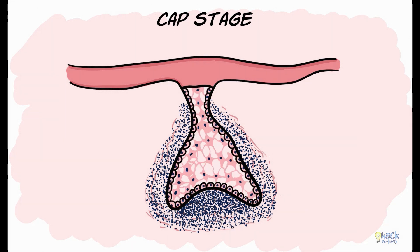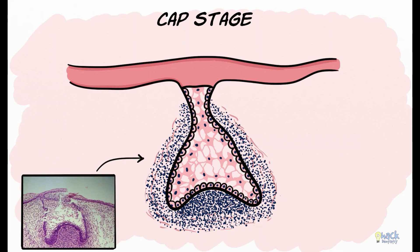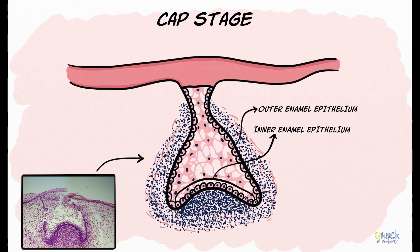In the cap stage, the enamel organ comprises three different types of cells called the inner enamel epithelium, outer enamel epithelium, and the stellate reticulum. Inner enamel epithelial cells are low columnar and line the invagination of the cap on the inside, while the periphery of the cap is lined by cuboidal outer enamel epithelium. In between these cells, filling the enamel organ, are cells called the stellate reticulum.